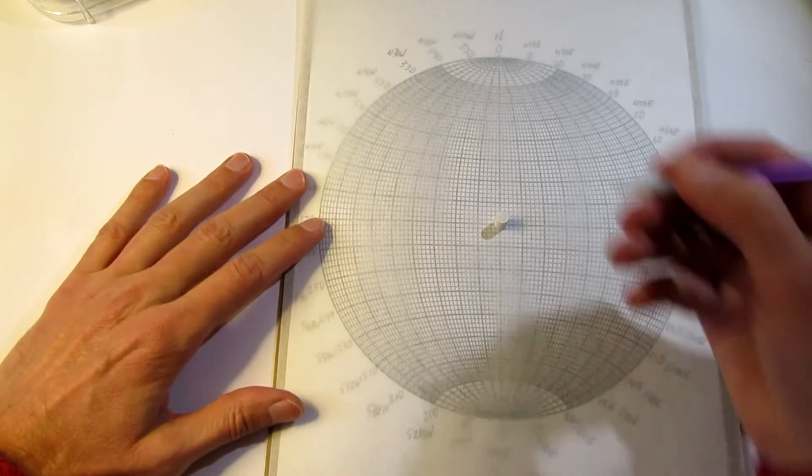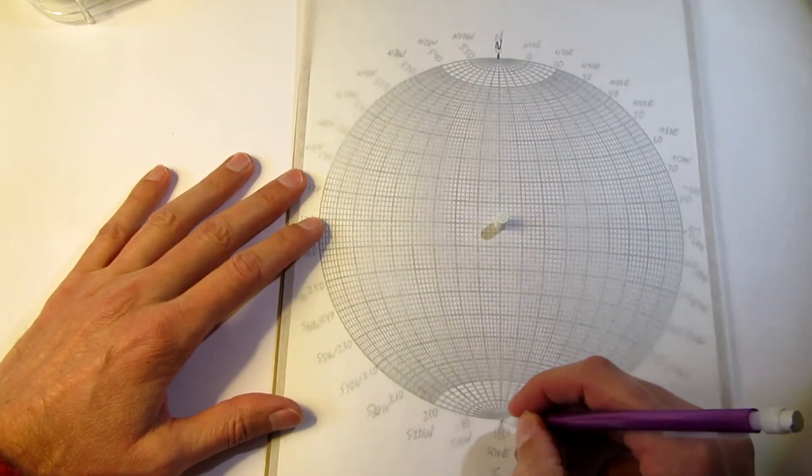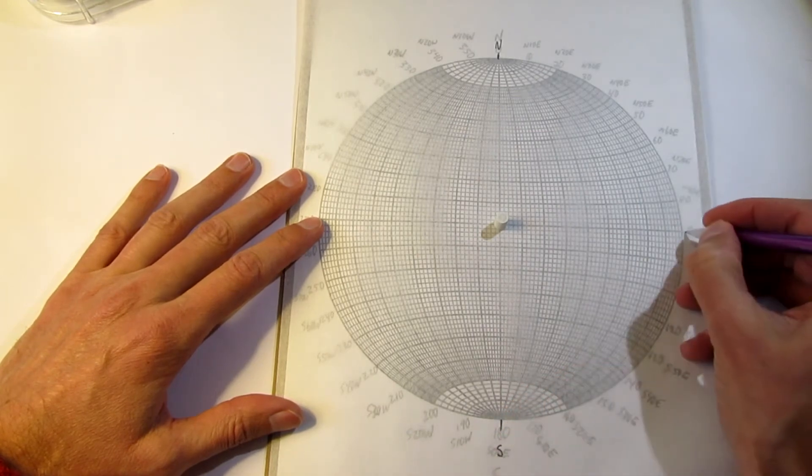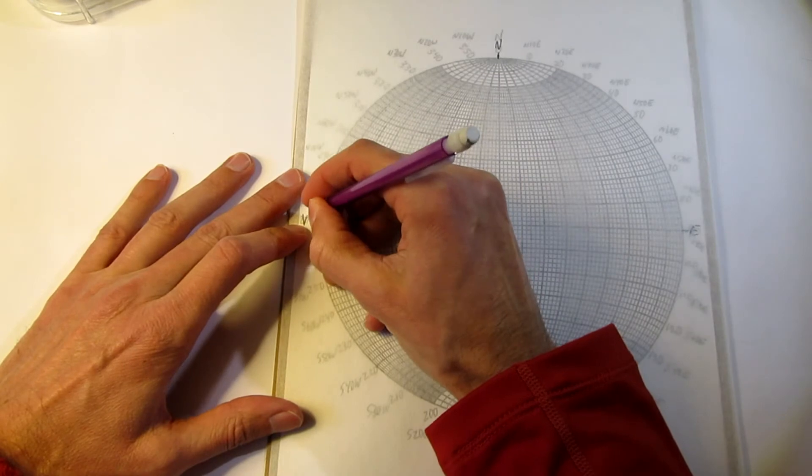And then, before any data gets plotted, I mark off north, south, east, and west.